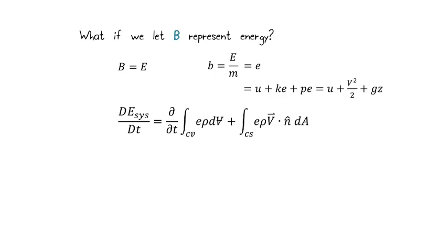So that gives us the Reynolds Transport Theorem that looks like this. We have the rate of change of energy of the system with respect to time equals the rate of change of energy within the control volume with respect to time, plus the energy that entered and left the control volume with mass flow.